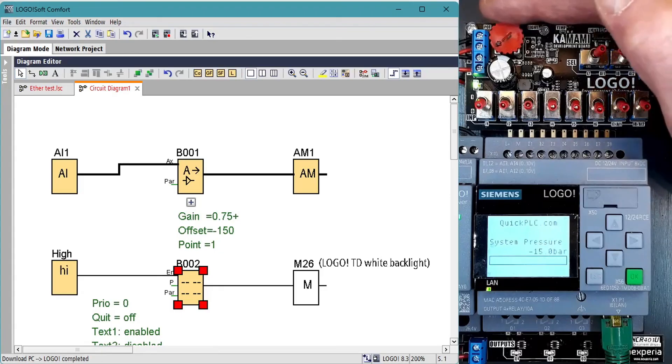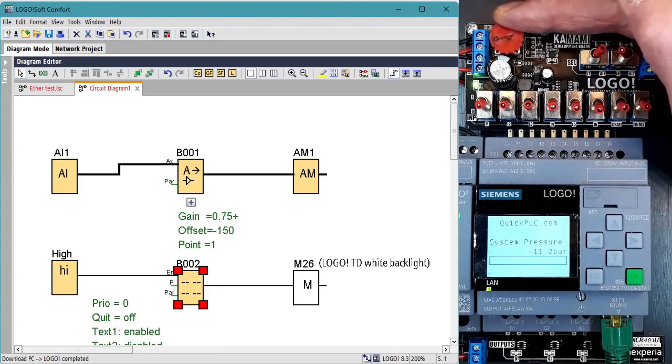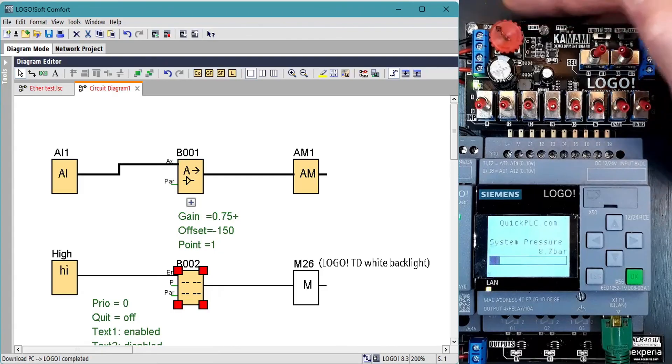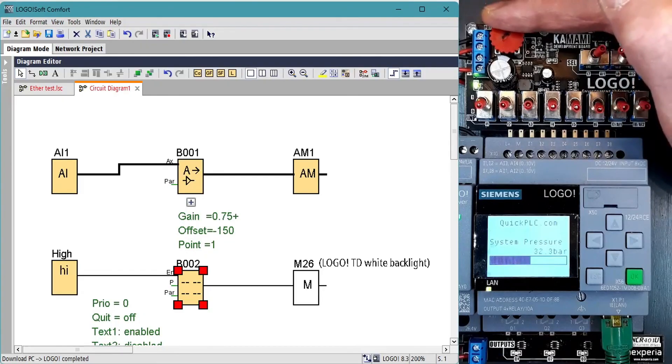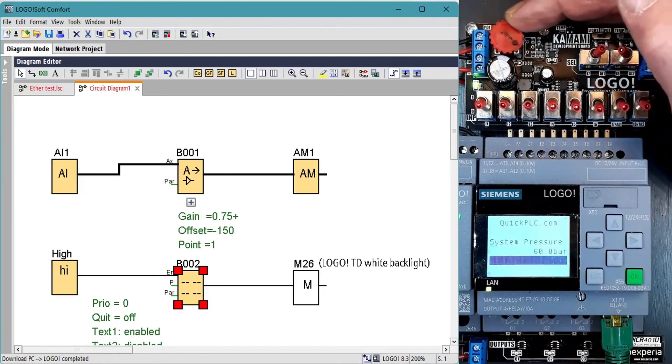We can see now that turning the pot about one-fifth of the way up results in a reading of zero and we still have a maximum of 60. So all is working fine.